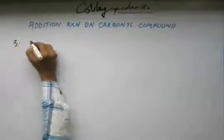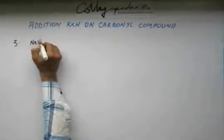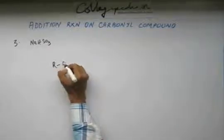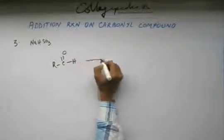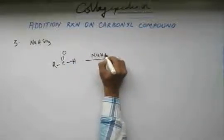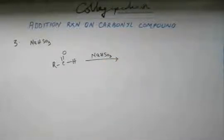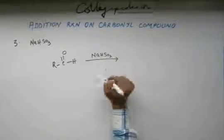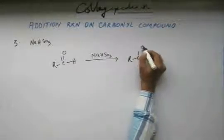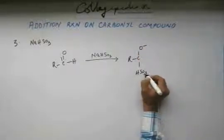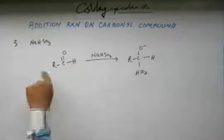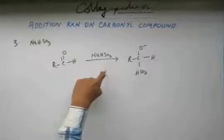Now the third kind of addition reaction will be addition reaction of NaHSO3 sodium bisulphite. If we take our aldehyde and add sodium bisulphite to it, then first what will happen is this HSO3 is going to be attached on this carbonyl group. Because it is a nucleophile, it is a weak nucleophile but nevertheless it is a nucleophile.